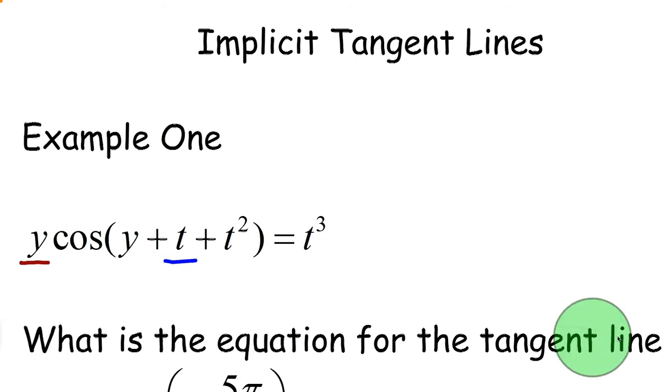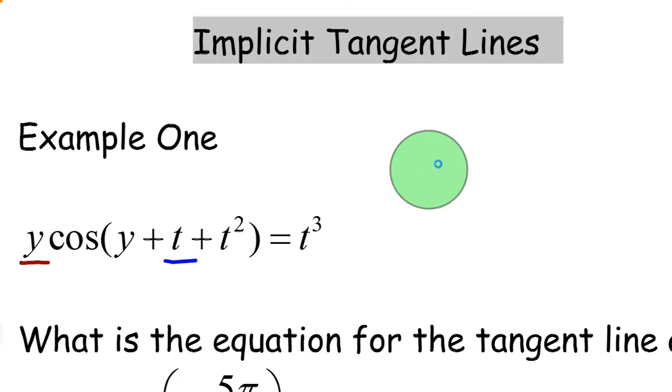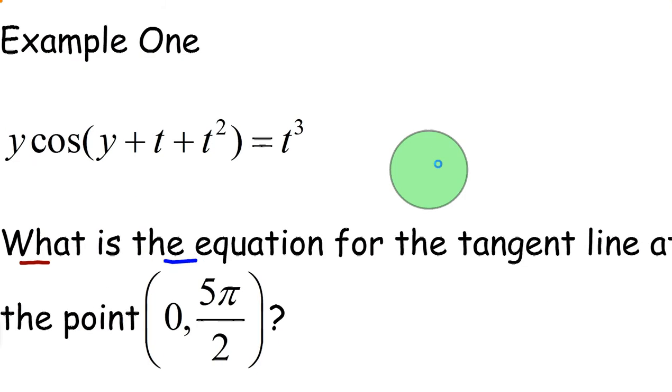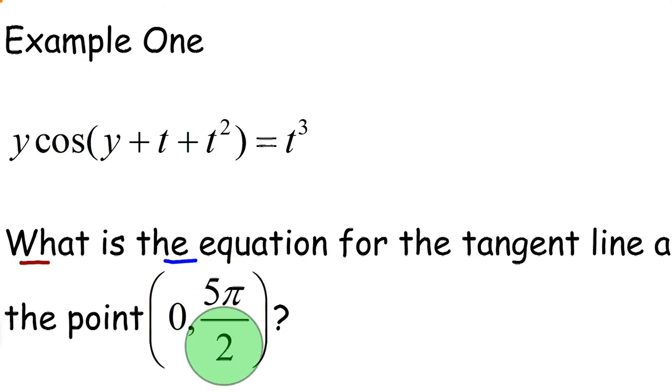So what is the equation for the tangent line at the point 0 comma 5π over 2? It's important to know that you have to have a point on an implicit function before you can find the slope of the equation for the tangent line. Now if they just gave you the x value, you could sometimes solve for the y value depending on the implicit function. But in this case, there are actually two different y values at 0. And so that's why we have to know a specific point.